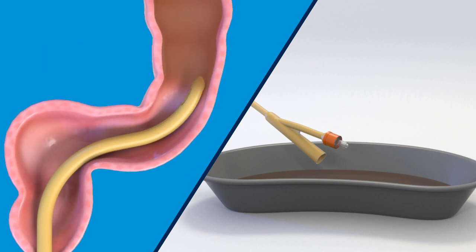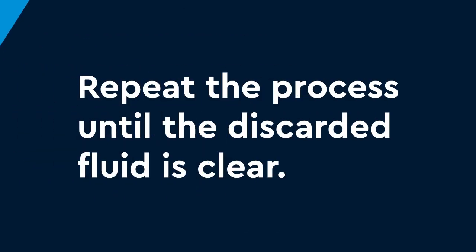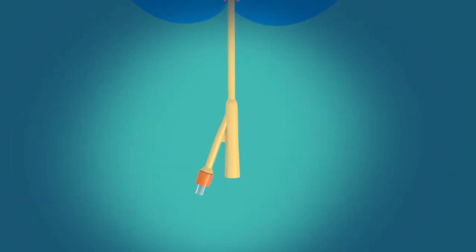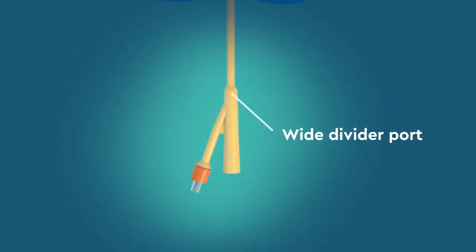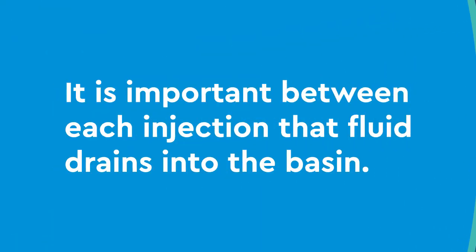Advance the catheter about one inch and repeat the process until the discarded fluid is clear. Do not advance the catheter further than the wide divider port. It is important between each injection that fluid drains into the basin.